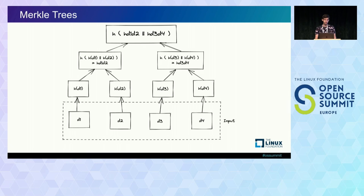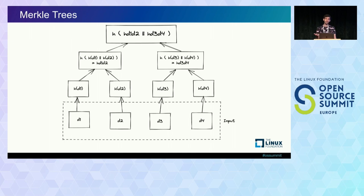So let's talk about Merkle trees, keeping these cryptographic hash function properties in mind, because we'll get some intuition about why they work the way they do. A Merkle tree is typically represented as a binary tree whose leaf nodes are hashes of input — in this case d1 through d4. Every non-leaf node is the cryptographic hash of its children. For example, to build h(d1,d2), I concatenate its children h(d1) and h(d2) and then hash it. Going up one level, I concatenate the two children and hash that value to get the root hash.